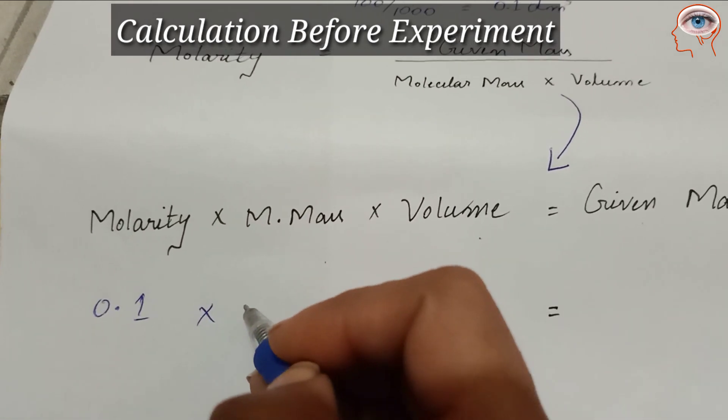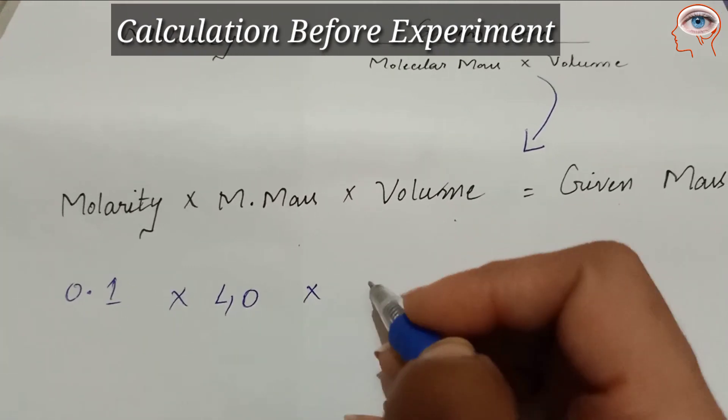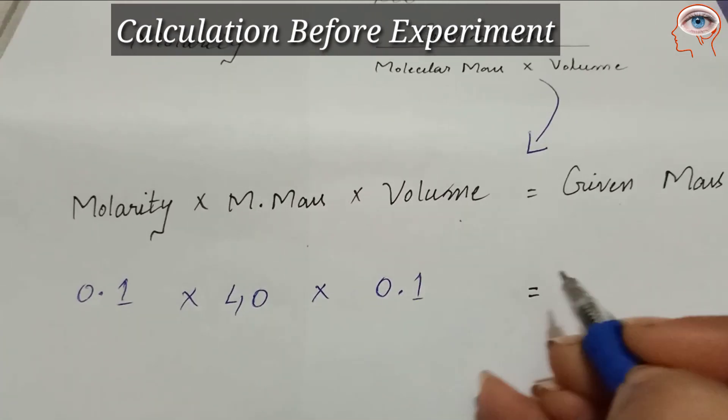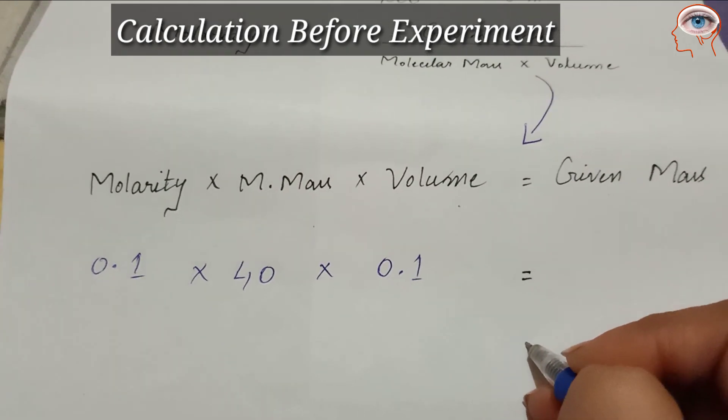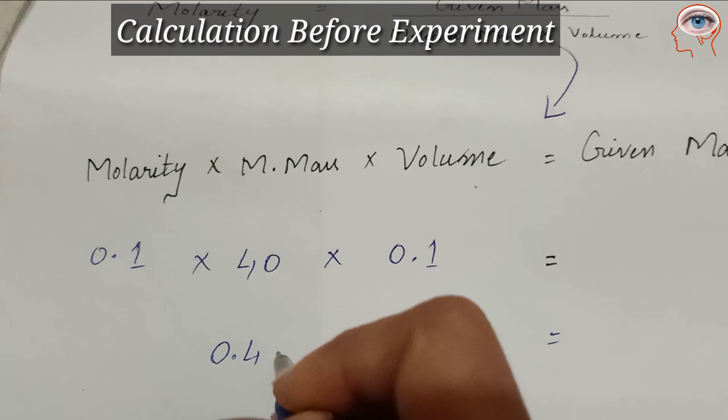Molarity is 0.1, molecular mass is 40, and volume is 0.1 decimeter cube. This gives us 0.4 grams, which is the mass of NaOH required.